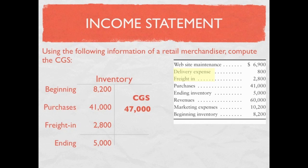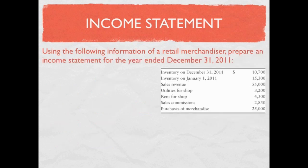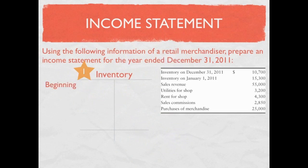Let's move on to a more comprehensive example. Here we're going to use this information to prepare a full income statement. Just as before, we're not given cost of goods sold directly, so step one is to calculate cost of goods sold. I'm going to use a T-account and fill in all the information I know.